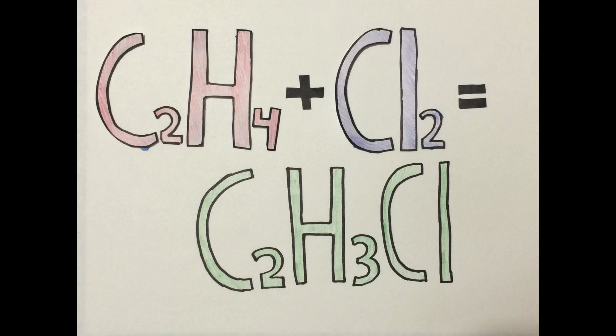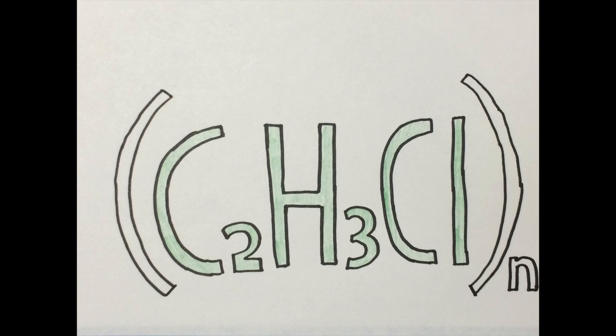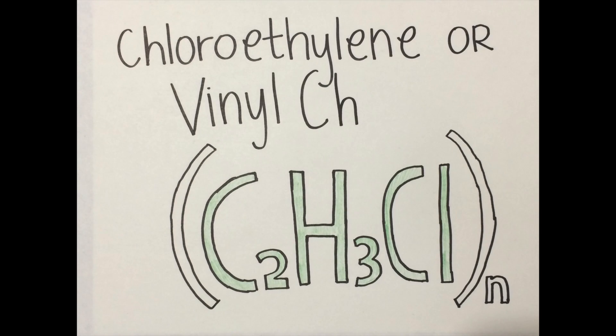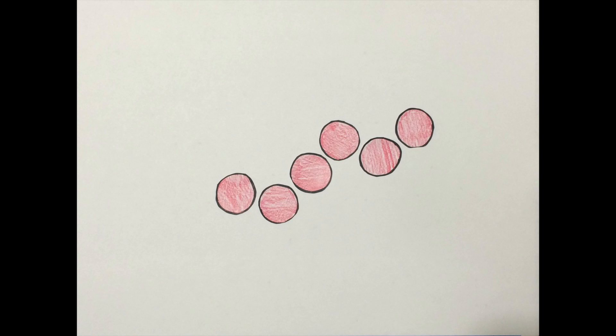a chemical formula of C2H3Cl. You have to put this chemical formula in parentheses with a subscripted n because it is a monomer called chloroethylene or vinyl chloride. A monomer is a molecule that can bond with identical molecules to form a polymer.